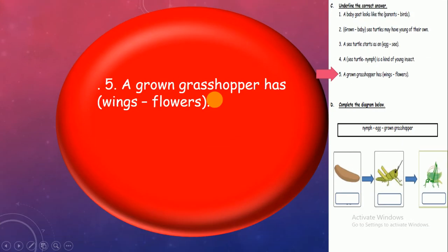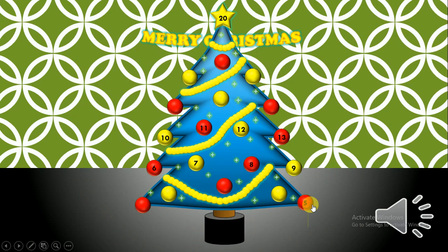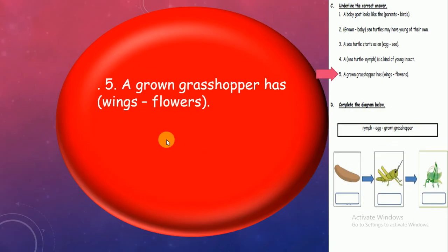Back to the Christmas tree. Number 5: A growing grasshopper has... Growing means adult, big. Has wings or flowers? Wings! Excellent! Can't be flowers! That's animal!